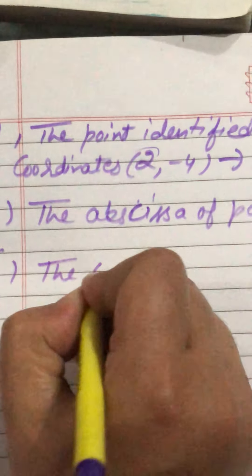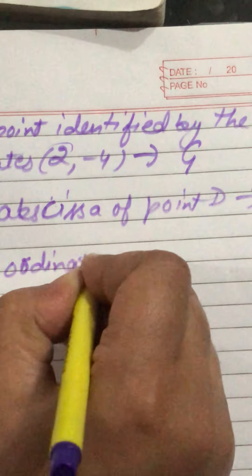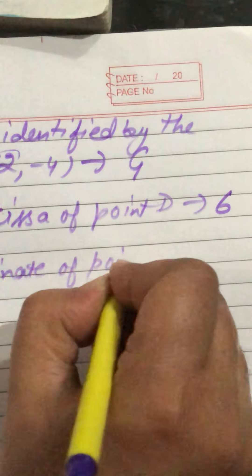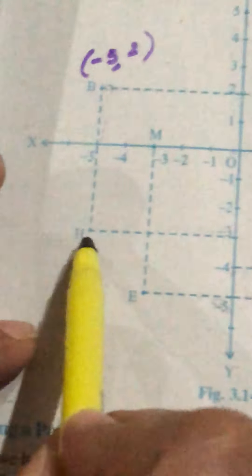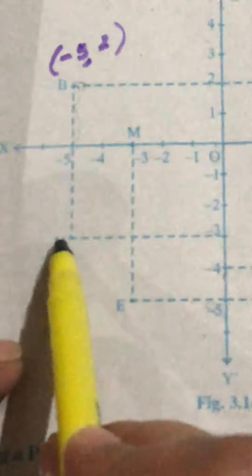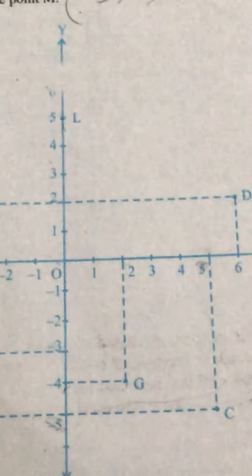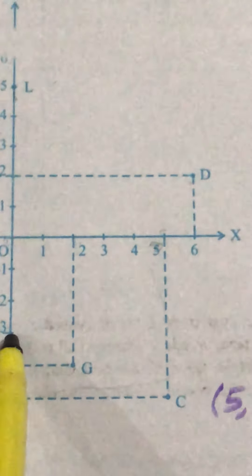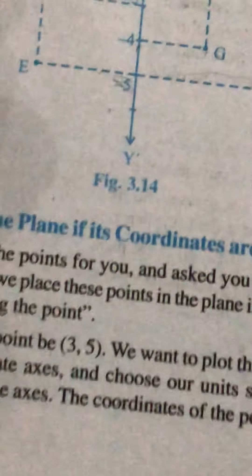Next is the ordinate of point H. Ordinate means y-coordinate. For point H, the x-coordinate is minus 5 and the y-coordinate is minus 3. The ordinate, which is the other name for y-coordinate, of point H is minus 3.